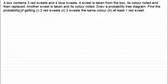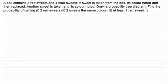We've got a box that contains three red sweets and four blue sweets. A sweet is taken from the box, its colour noted and then replaced. Then we take another sweet and its colour is noted. We've got to draw a probability tree diagram, then find the probability of getting two red sweets, two sweets the same colour, and at least one red sweet.